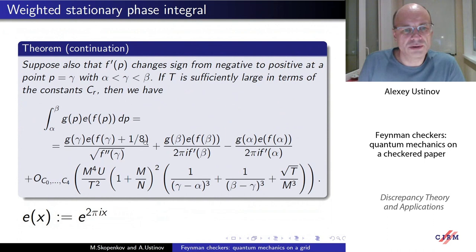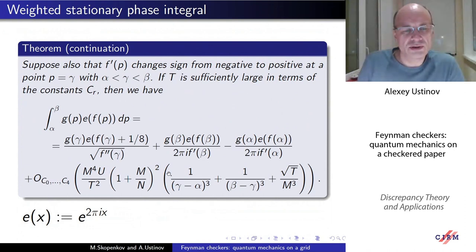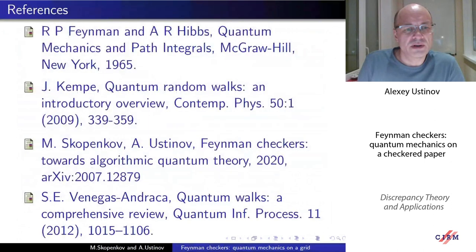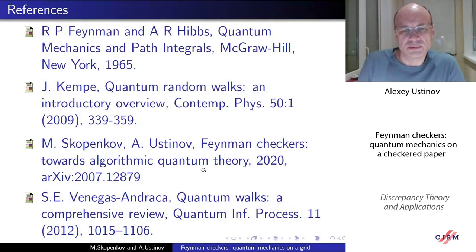If the functions g and f satisfy these conditions, we can write down an asymptotic formula for such an integral. The stationary point gamma is the unique stationary point on our segment from alpha to beta where the first derivative of f is zero and the derivative changes sign. The formula gives the main term, some boundary terms which vanish for the Fourier integral, and a sharp error term. Taking our functions and calculating all these quantities, we arrive at the desired result. Additional information can be found in the cited sources, and our work is published on arXiv — it can be found using the title of our talk: 'Feynman Checkers: Towards Algorithmic Quantum Theory.' Thank you for your attention.